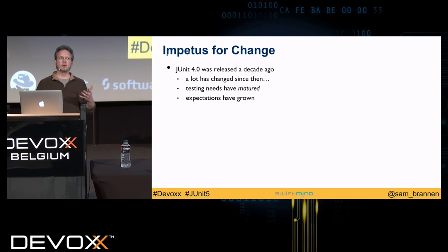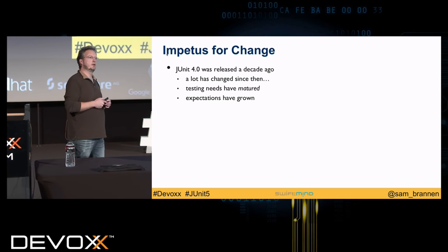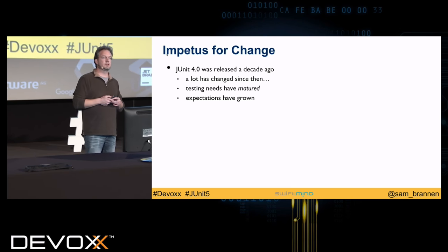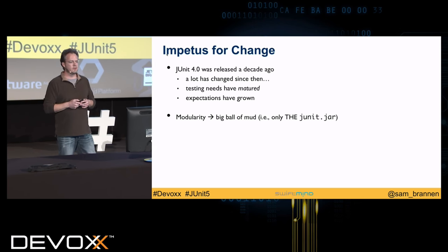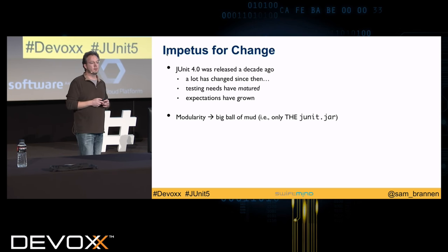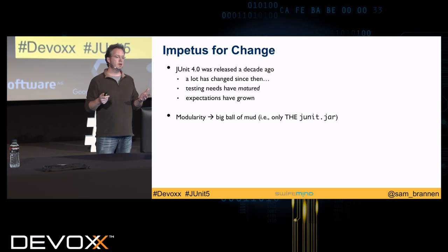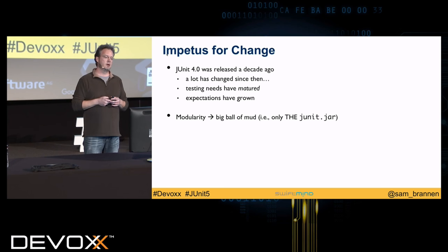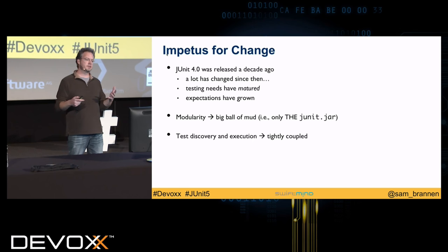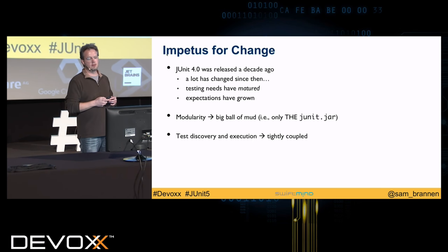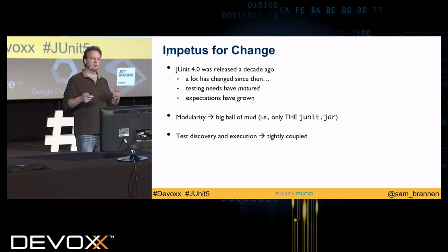Third-party developers had to do more than they should have to integrate with JUnit 4. For example, the code I had to implement for a runner to integrate Spring, or the rules I had to write — that was more work than should be needed. The Spring extension for JUnit 5 has about ten times less code to integrate. In terms of modularity, JUnit 4 is basically a big ball of mud — just one jar that contains everything: what you need to write tests, what IDEs need to run tests, and what extension writers need. That led to test discovery and execution being tightly coupled, not very modular, and not easy to change.